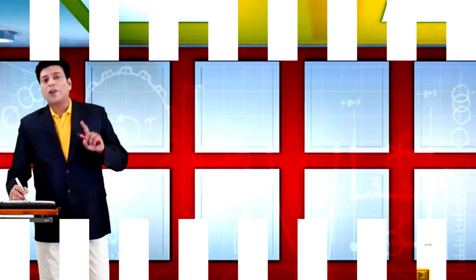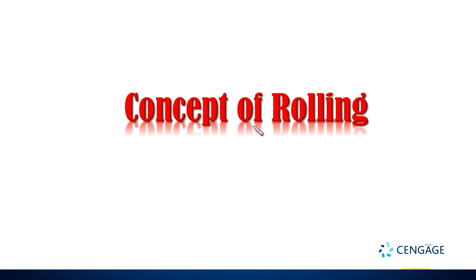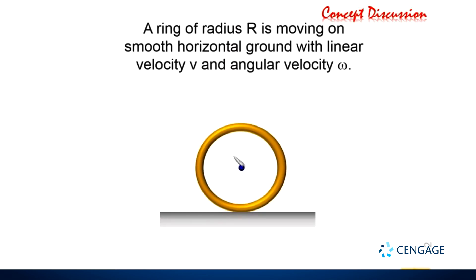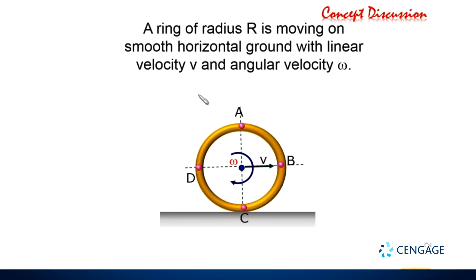Now we are going to learn the concept of rolling motion. Let us take a rolling wheel having radius r, moving with velocity v and rotating about an axis passing through the centre with angular velocity omega. Let us take points A, B, C, D on the circumference of the ring and find the velocities of these four points.